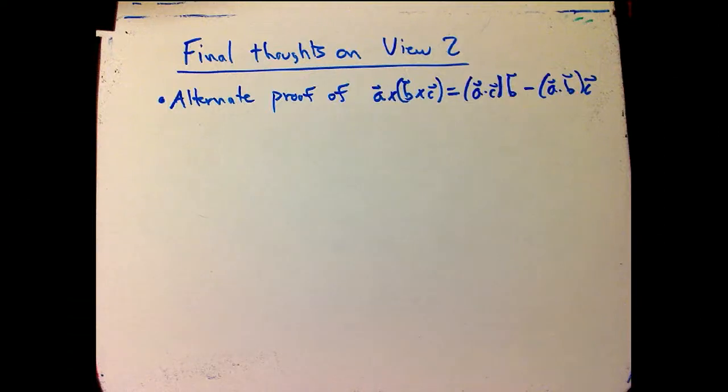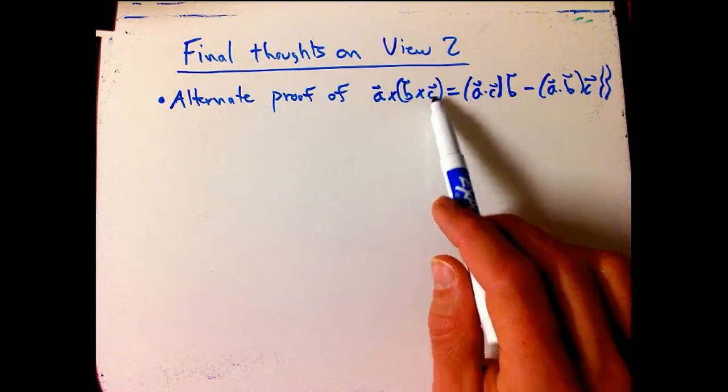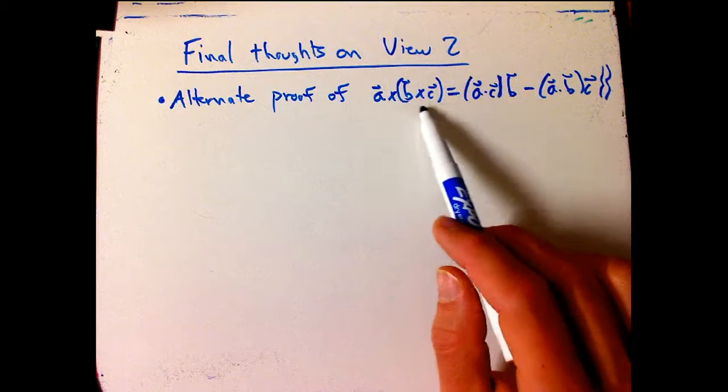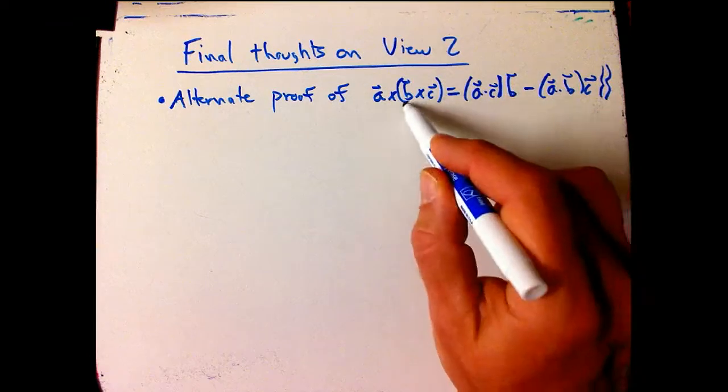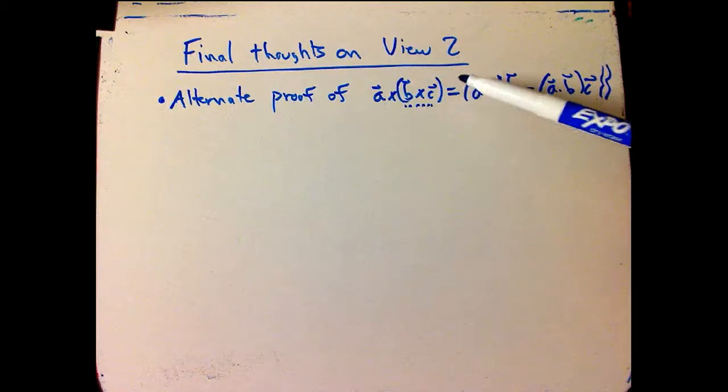Here's some final thoughts on view number two, the differential form view of the triple vector product identity, or vector triple product, I seem to be saying both things. One of the things that I was emphasizing in the last couple videos is the idea that when you take the cross product, at least one version of the cross product, is that you're really thinking about two forms.